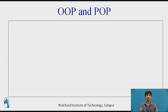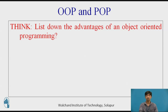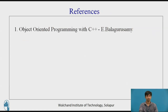Pause this video for a few seconds and list down the advantages of object-oriented programming. Key advantages include reusability of the code, and encapsulation — providing security to the code through objects and member functions. The reference for this topic is Object-Oriented Programming with C++ by E. Balagurusamy. Thank you.